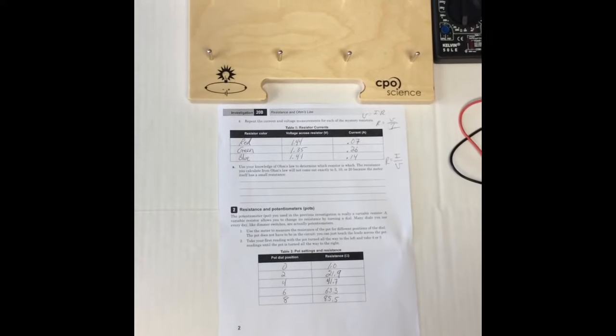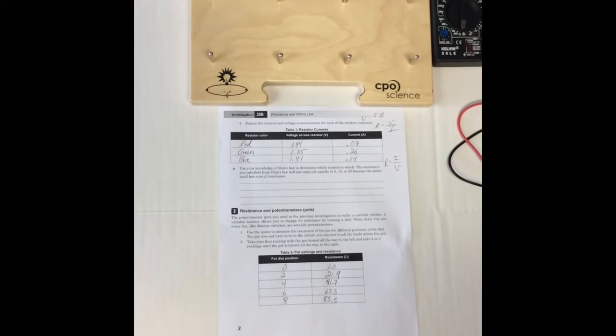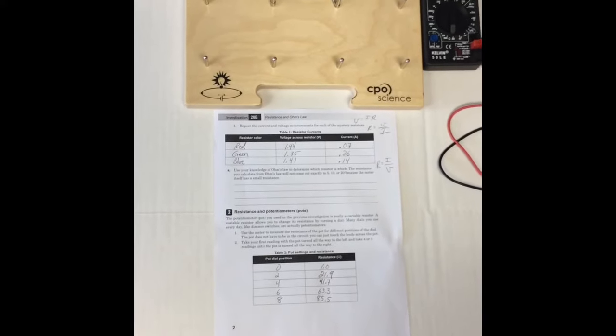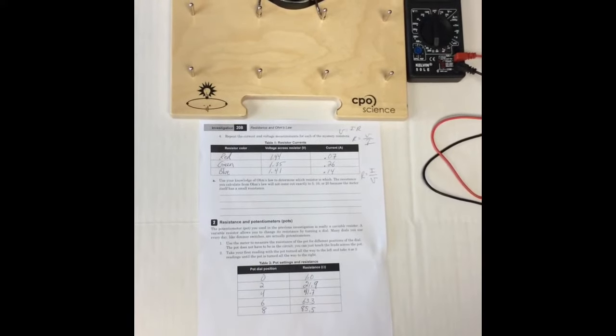We've gone ahead and we've turned the dial. We've tracked position 4, 6, and 8. And you can see our resistance readings at those locations.